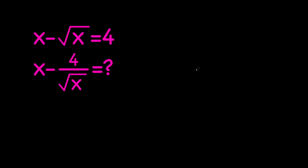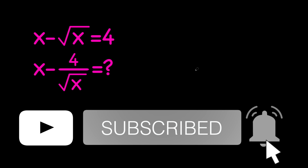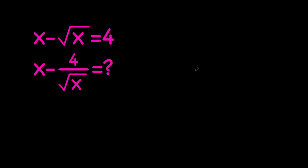Hey there, folks. Today we're going to be evaluating an expression using a given equation. So we have x minus root x equals 4, and we're supposed to evaluate x minus 4 over the square root of x. In this video, we're going to be solving our problem in two ways, so make sure to watch till the end to not miss the second method.